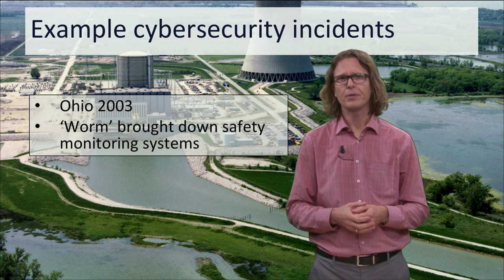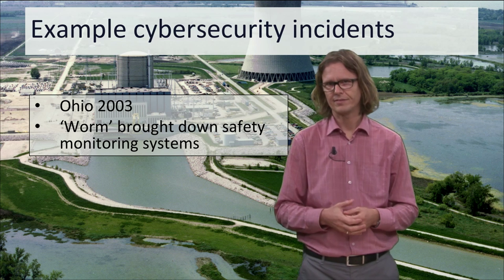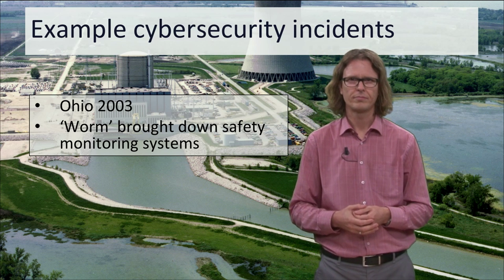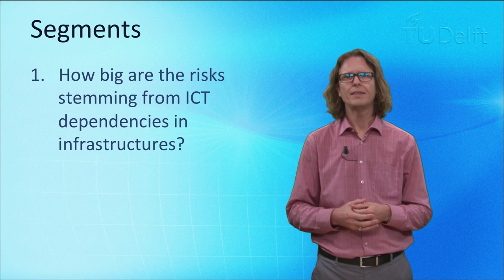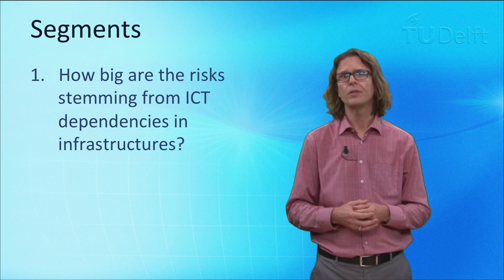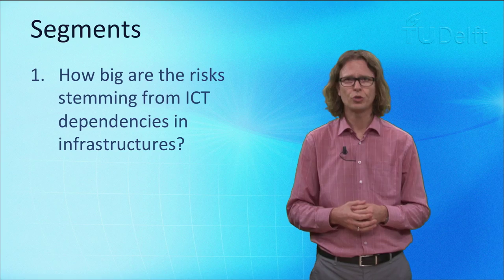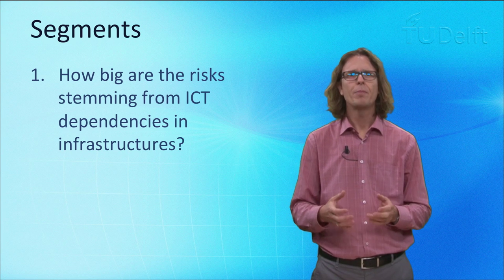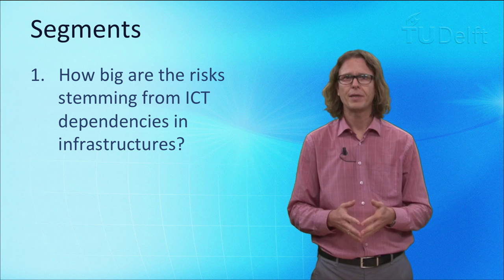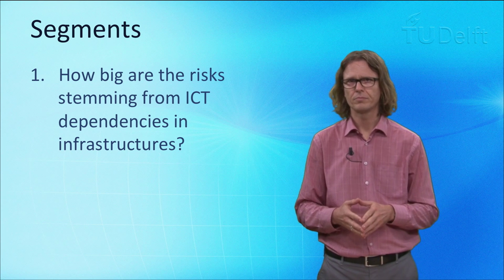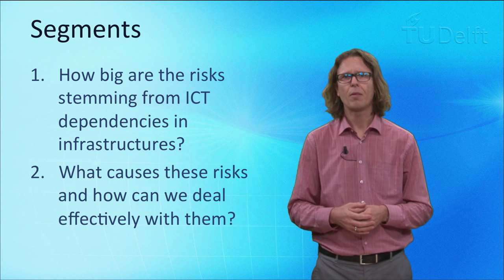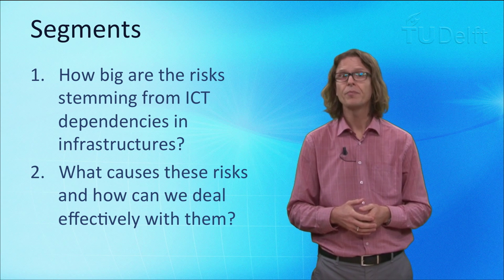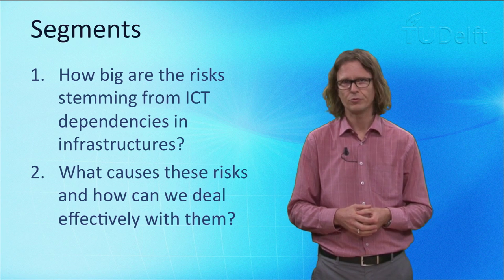And this is just malware infections. There are many more attack scenarios affecting ICT systems in critical infrastructures. These ICT-related risks are what this part of the MOOC is about. It consists of two short segments. In this segment we explore the question: how big are the risks stemming from ICT dependencies in infrastructures? In the second segment we ask the logical follow-up question: how can we deal effectively with those risks?